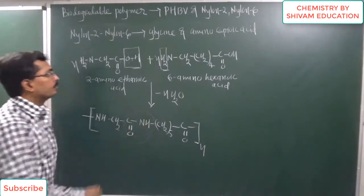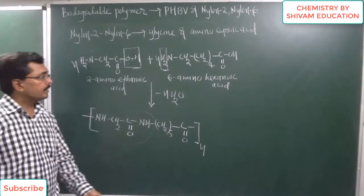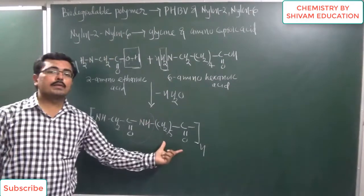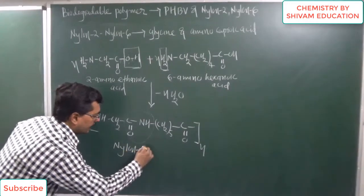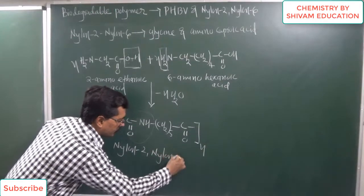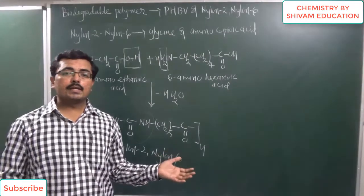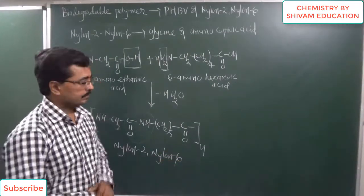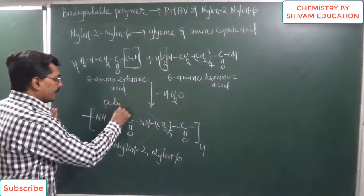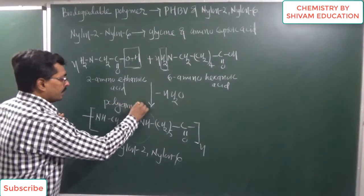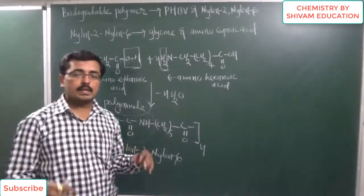This polymer is a polyamide and is named Nylon. The first monomer has 2 carbon atoms and the second monomer has 6 carbon atoms, so the name of this polymer is Nylon 2-Nylon 6. It is one polyamide group of polymer. Together with other polyamide polymers such as Nylon 6, all of these are biodegradable polymers.